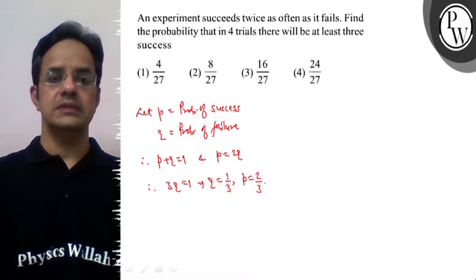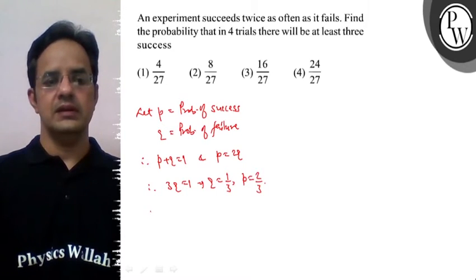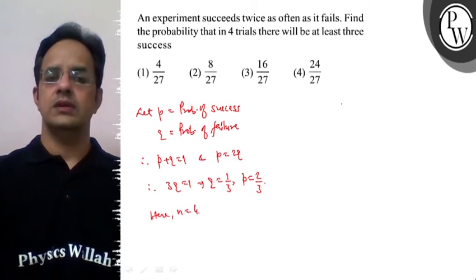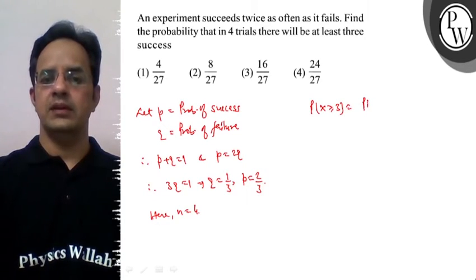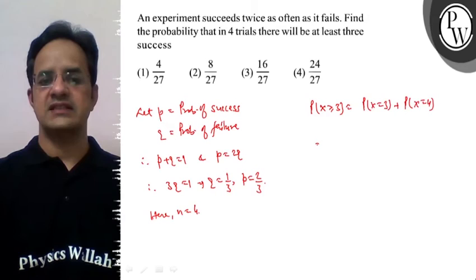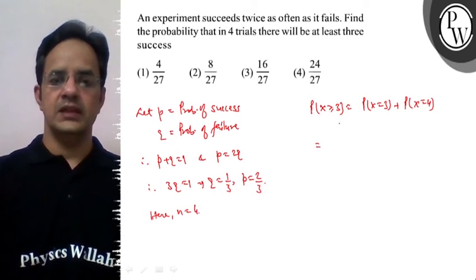Now we need at least three successes. Number of trials given is 4. So probability of x greater than or equal to 3 is the probability for x equal to 3 plus the probability of x equal to 4, where x is the number of successes.